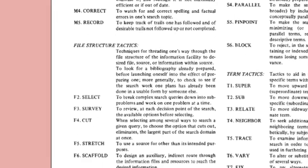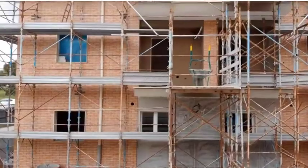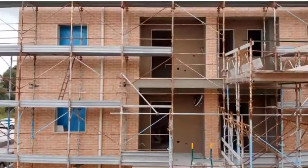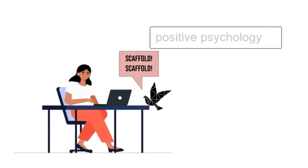You might SCAFFOLD, which means to take an indirect route during a search. This is effective when your topic contains common words. For instance, when searching for information on positive psychology, you might instead search on the name of its founder, Martin Seligman.